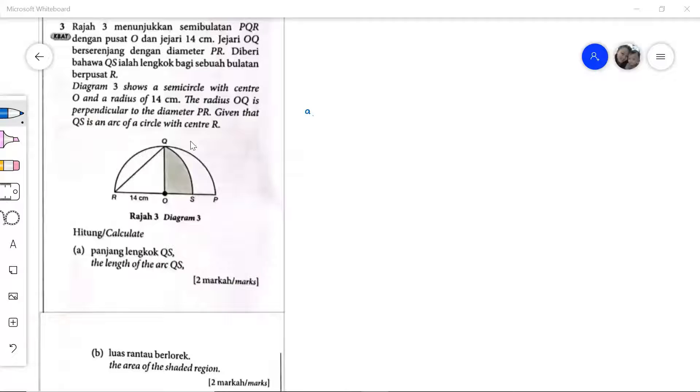The diagram shows a semicircle with center O and radius 14. The radius OQ is also a radius, so let's mark it down. This is 14, same as this. The radius OQ is perpendicular to diameter PR, so we form 90 degrees here. I will draw the 90 degree inside the triangle so that we know that this is a right angle triangle.